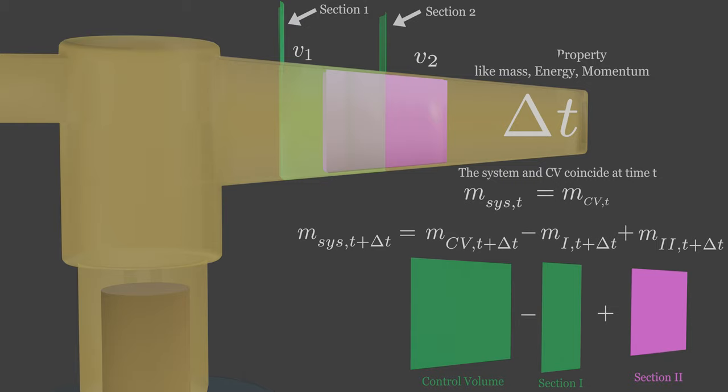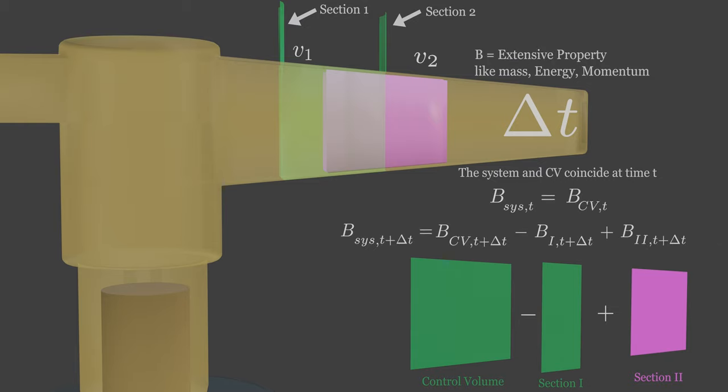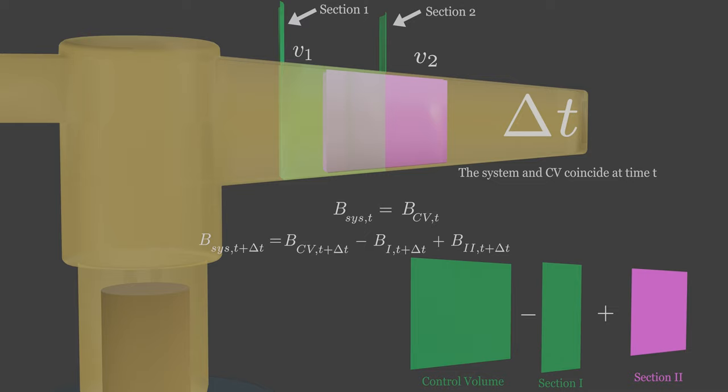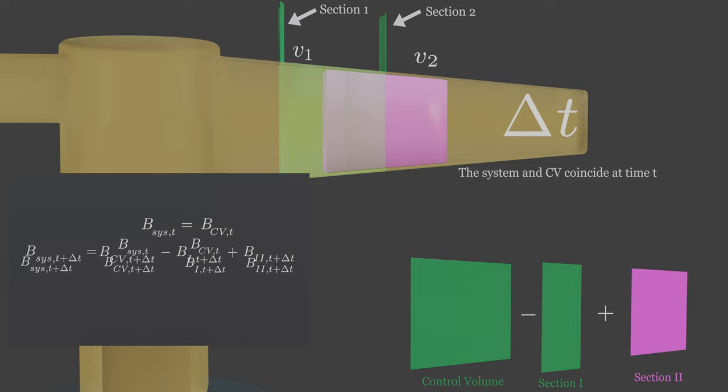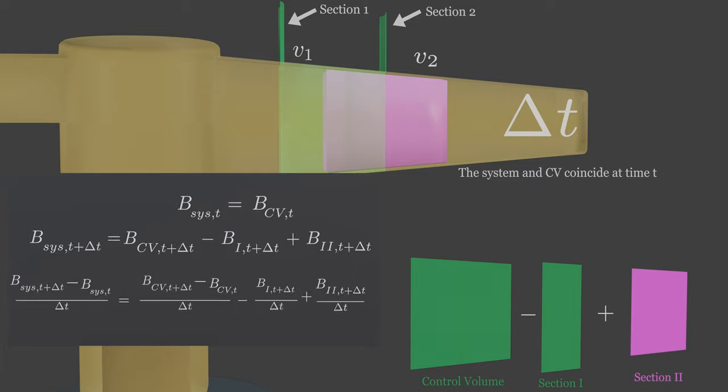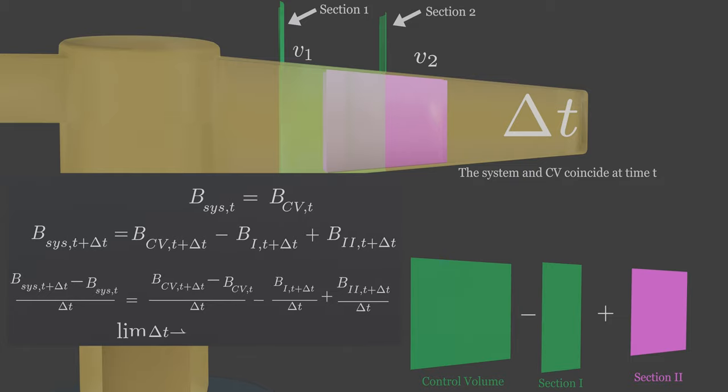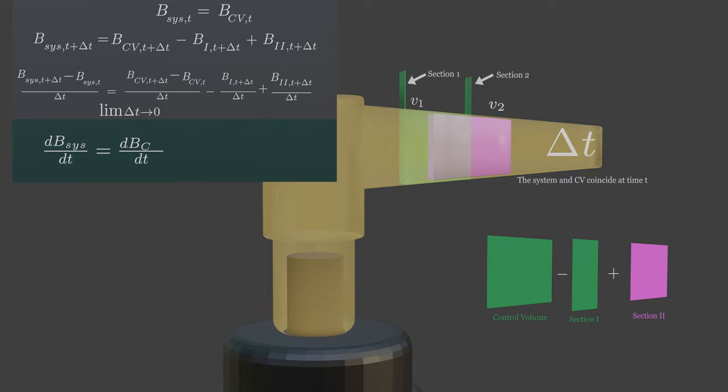Let's replace the mass by any extensive property. Because not only mass, it can be energy, momentum or other extensive property that can be used in system. Now, subtracting the first equation from the second one and dividing by delta t gives. By taking the limit as delta t goes to zero, we can finally use the definition of derivative.